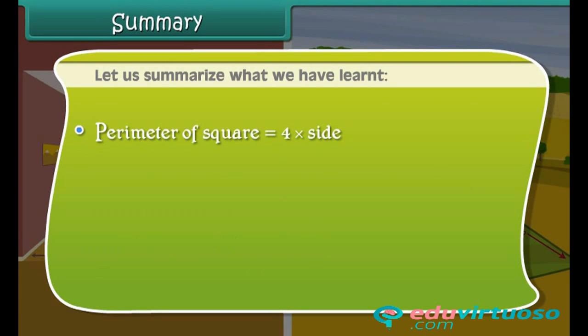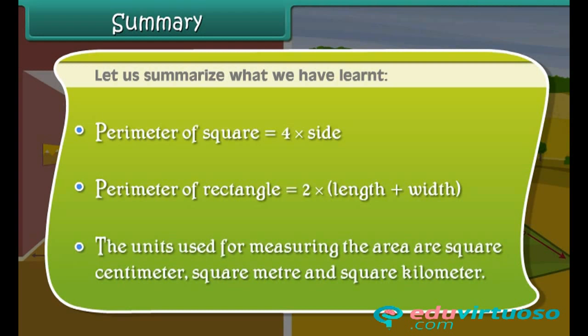Perimeter of square equals 4 into side. Perimeter of rectangle equals 2 into (length plus width). The units used for measuring area are square centimeter, square meter, and square kilometer.